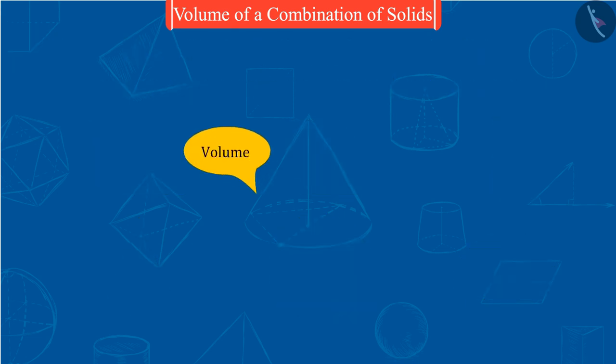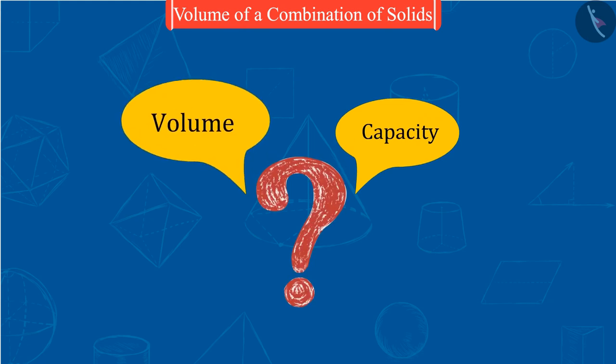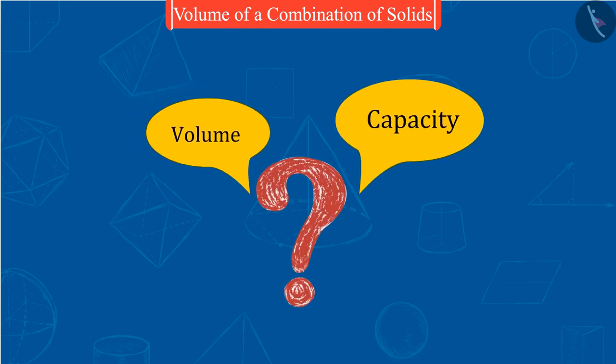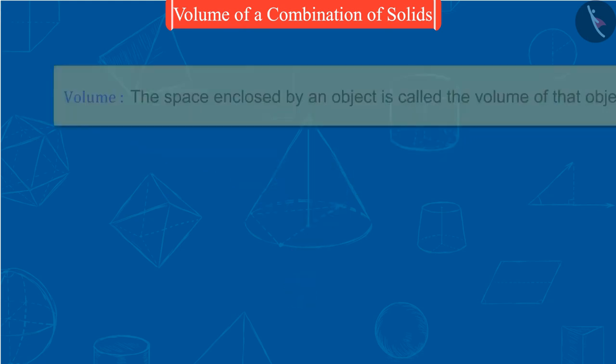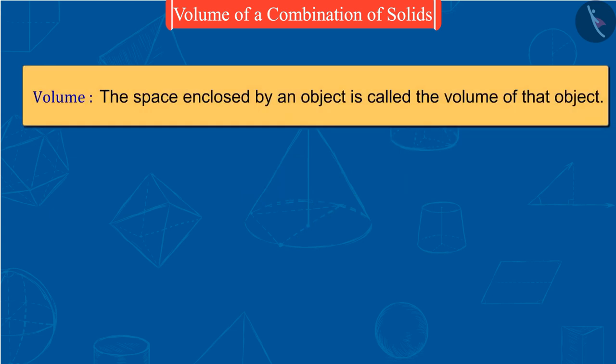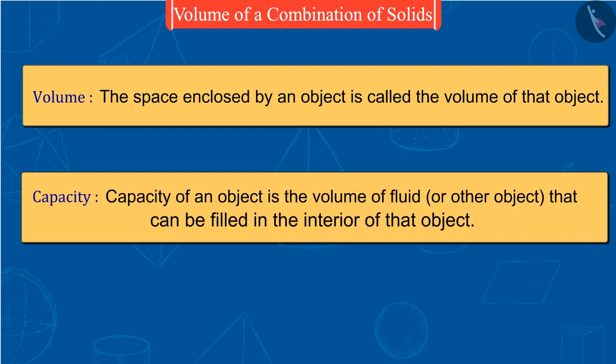Can you tell what volume and capacity mean? Well done. The space enclosed by an object is called the volume of that object. Capacity of an object is the volume of fluid or other object that can be filled in the interior of that object.